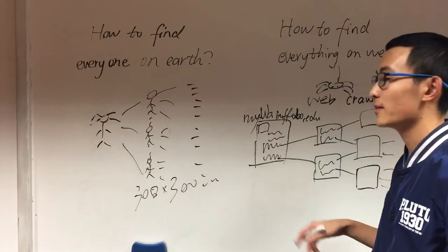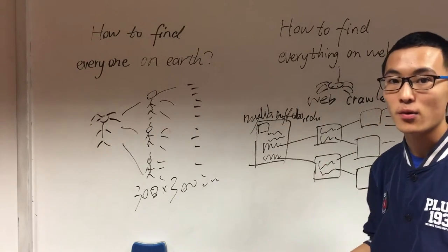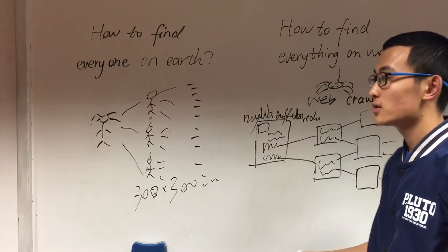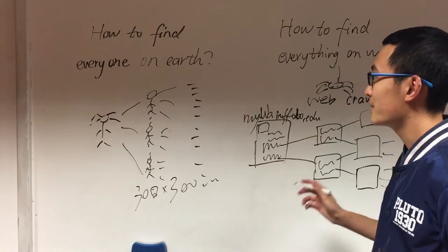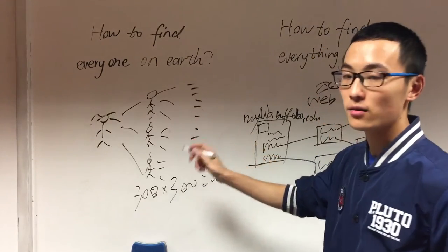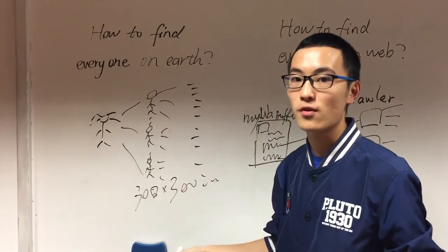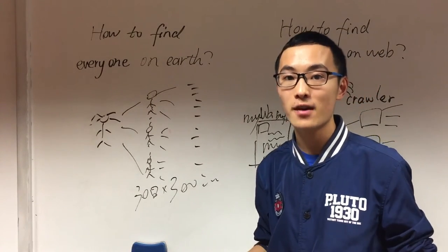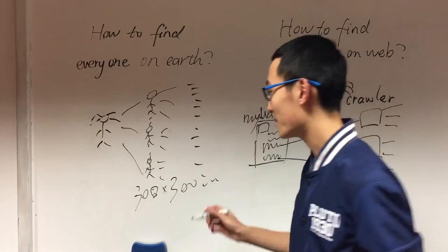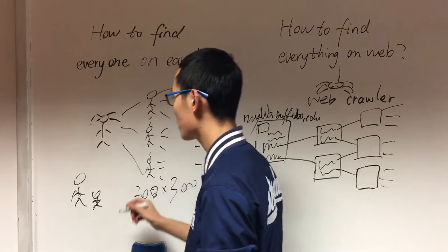For example, if all the links in these pages no longer point to a new page, what are we going to do? It's pretty simple. Imagine that to find everyone on Earth, the number of people I know from my mom is limited. I can ask my father, my sister, my friends. I can not only start from my mom.